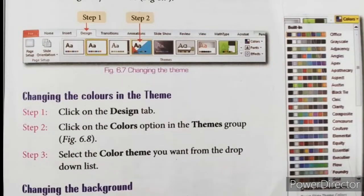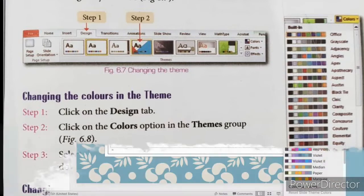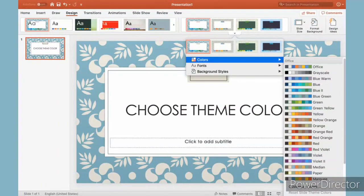Changing the colors in the theme. Aap ne jo theme select kiya hai, aap uske colors ko bhi change kar sakti ho. Click on the Design tab, click on the Colors option in the Themes group, and select the color theme you want from the drop-down list.